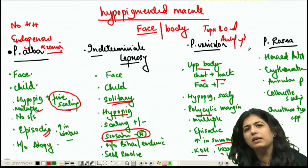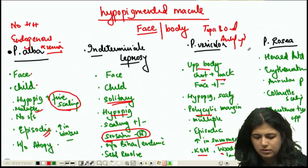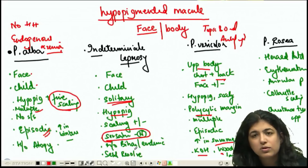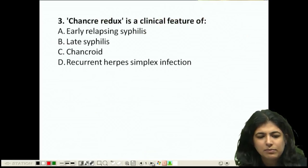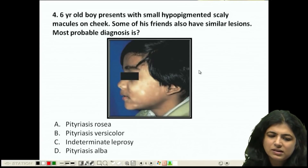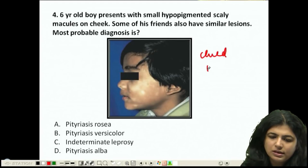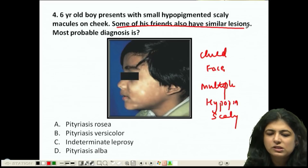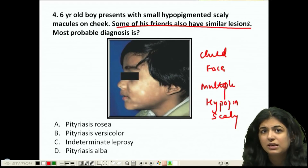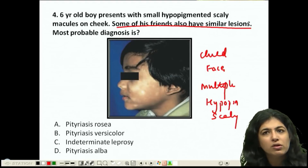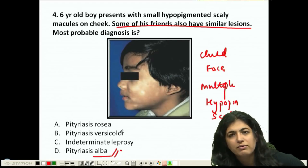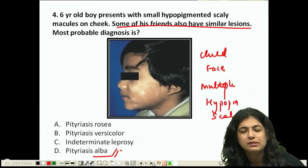Pityriasis rosea has a herald patch and collarette scaling — you know it well. So one of these four is always there in the exam. Coming back to the question: it's a child, lesions are on the face, they are multiple, hypopigmented and scaly. There is something in this question trying to confuse you — it says other friends have it too, so it might seem like an infection, but no. It is normal for many children to have it. The diagnosis here is Pityriasis alba. Clear to everyone? Good.